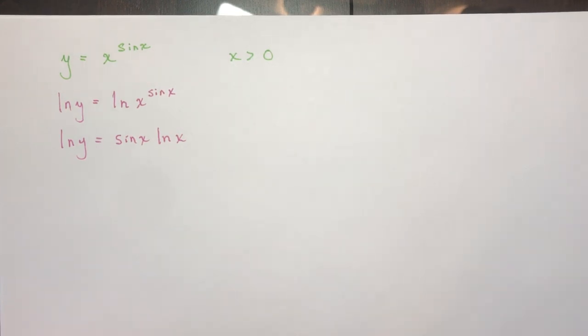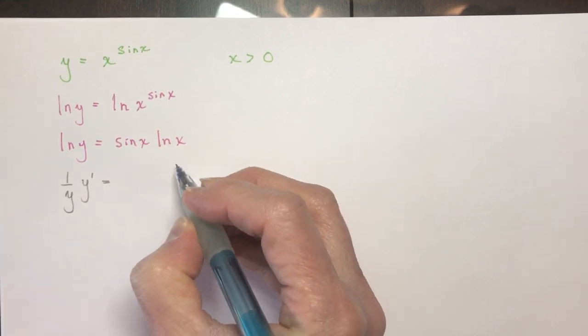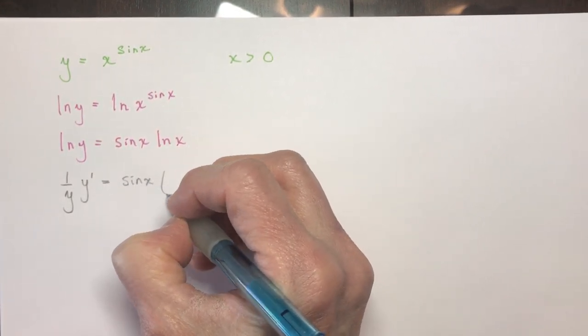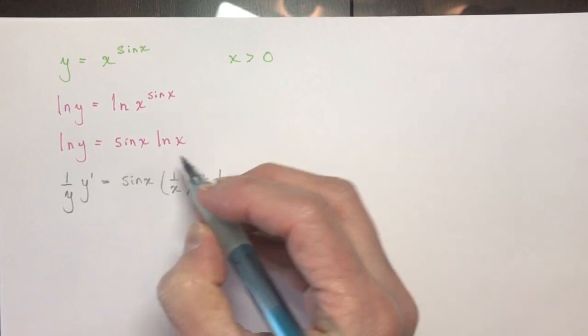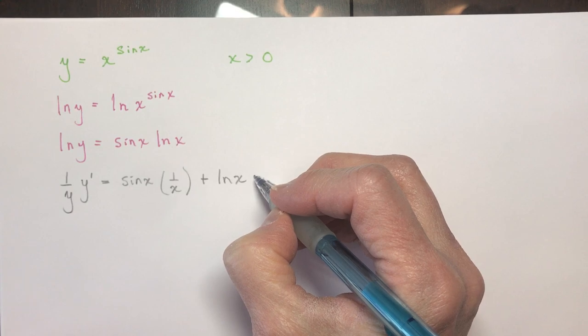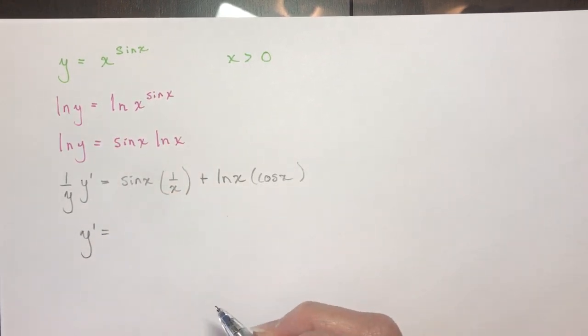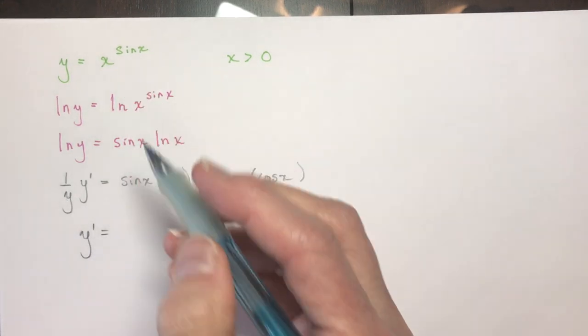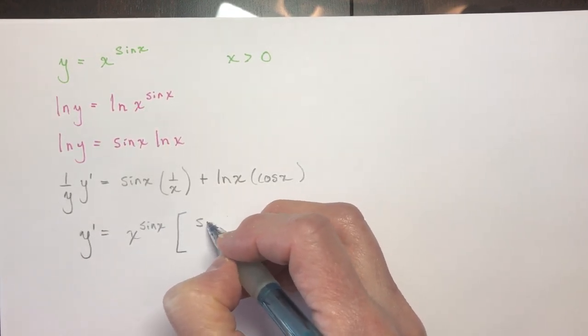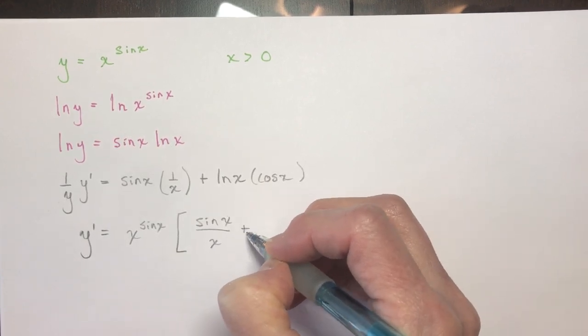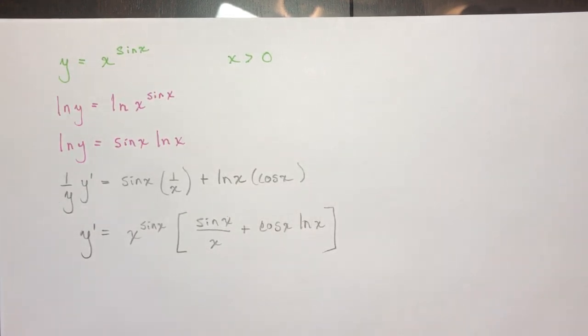Now be careful here because you still have product rule. We have sine x times ln x. So now I'm going to take the derivative. So I'm going to say 1 over y, y prime equals, so the first is sine x. The derivative of ln x is 1 over x. First times the derivative of the second plus the second ln of x times the derivative of sine x. The derivative of sine x is cos x. And in the next step I'm going to do, I'm just going to multiply by y on both sides. Where y is x to the sine x. Make a bracket. And I have, I'm just going to straighten this up a little bit. So I have sine x over x plus cos x ln x. I was going to write sine. And that's as easy as it can be.